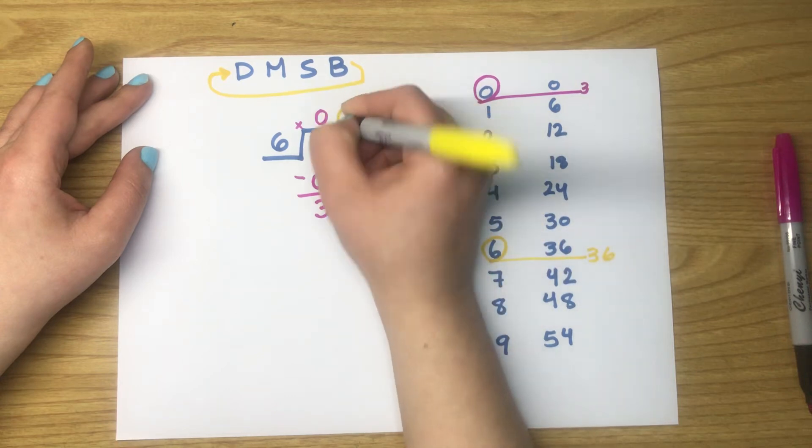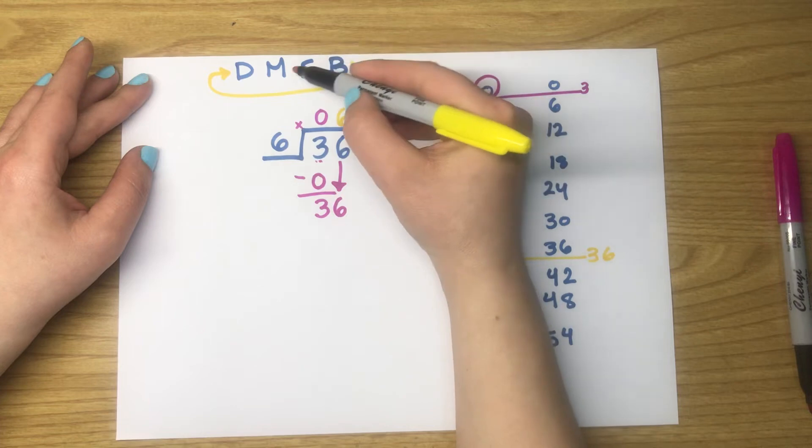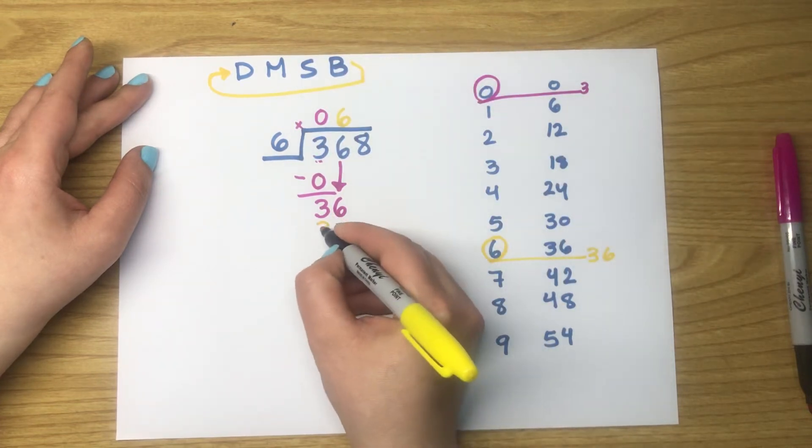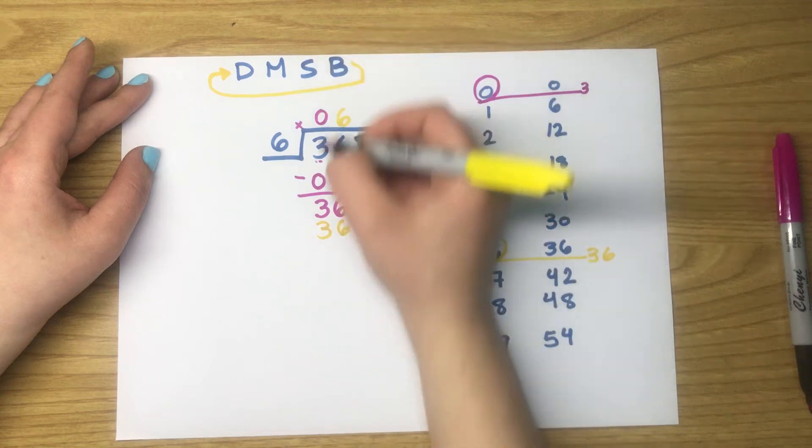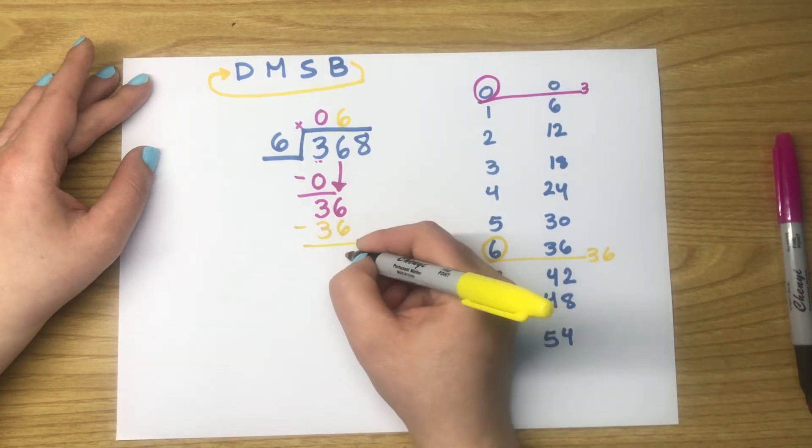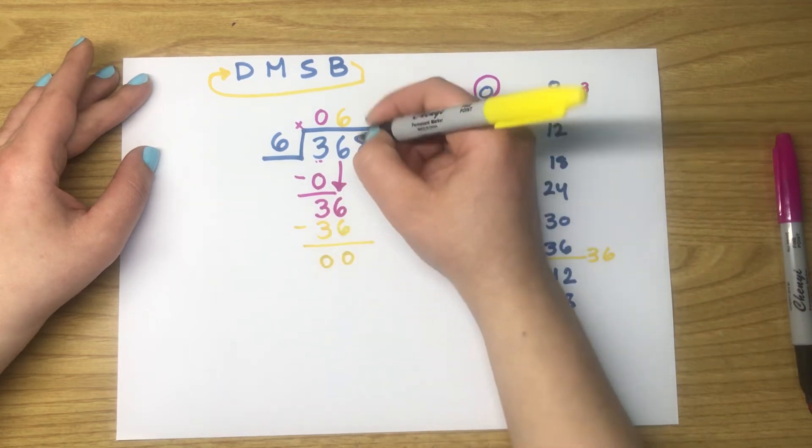Now it's time to multiply: 6 times 6 equals 36. It's time to subtract. The answer is 6 take away 6 is 0, 3 take away 3 is 0.